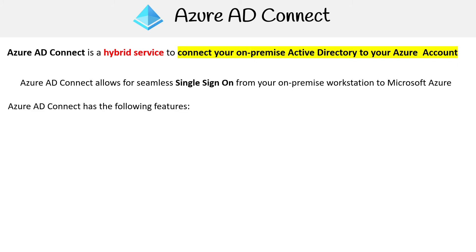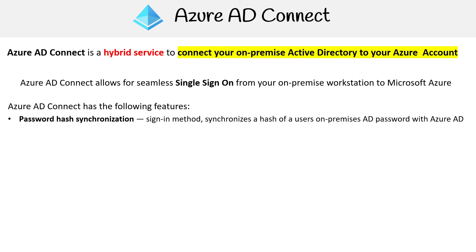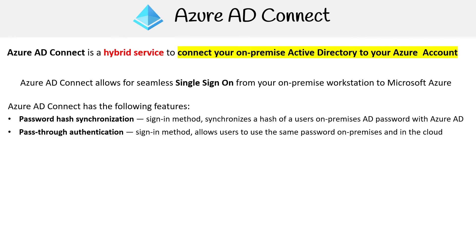Azure AD Connect has the following features. First, we have password hash synchronization — this is a sign-in method that synchronizes a hash of a user's on-premise AD password with Azure AD. Then you have pass-through authentication, another sign-in method that allows users to use the same password on-premise and in the cloud.